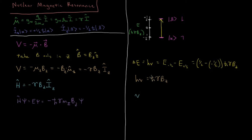Simplifying: H times nu equals one-half minus minus one-half equals one, so this is H-bar gamma B_Z. Since H-bar is H over two pi, the H cancels and we are left with nu equals gamma B_Z over two pi.